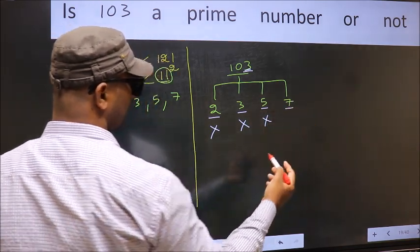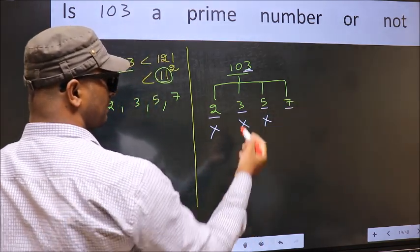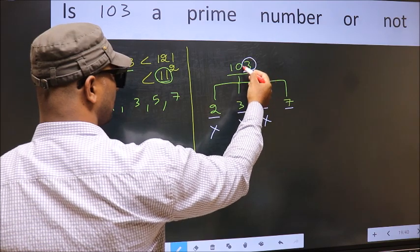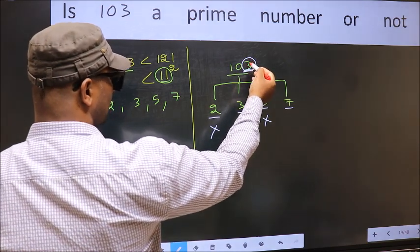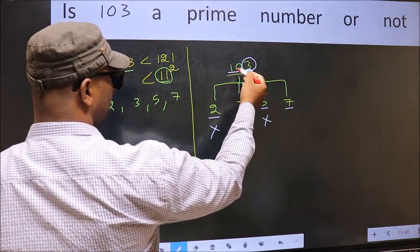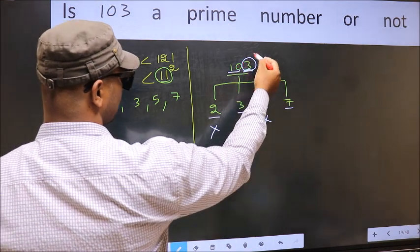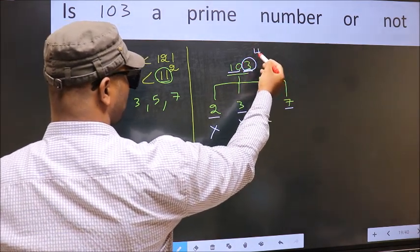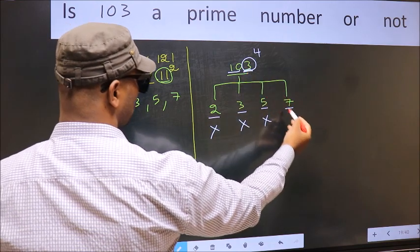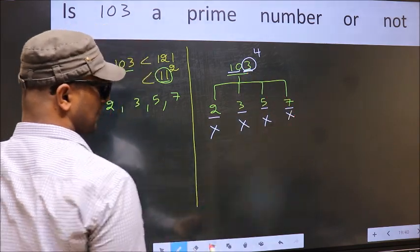Next number, 7. To check divisibility by 7, you double this: 3 into 2 is 6. Subtract from this, 10. 10 minus 6, we get 4. 4 is not divisible by 7. So, this number is also not divisible by 7.